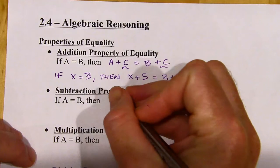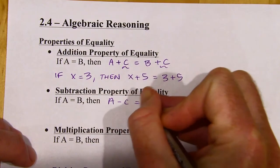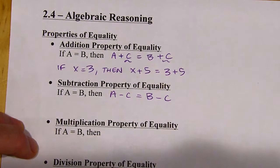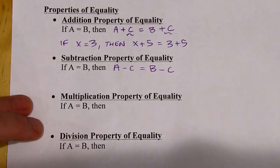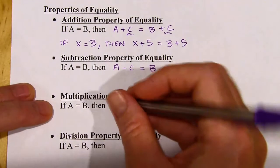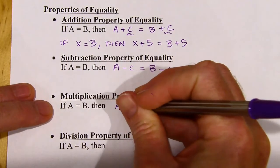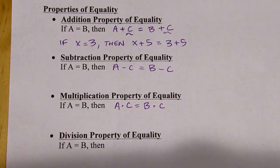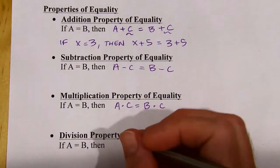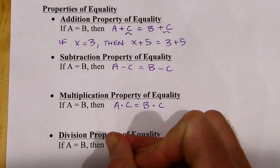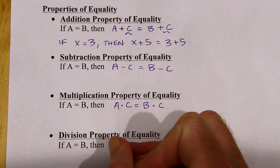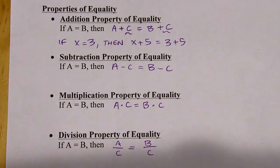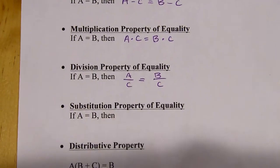The subtraction property is the exact same idea, except that you're subtracting the same thing from both sides of the equation. I could have written the same thing with subtracting 5 on both sides. The multiplication property of equality is when we multiply both sides of an equation by the same thing — so I can multiply both sides by C. And then the division property: we can divide both sides by the same thing, either using the division symbol or as a fraction. So I had A equals B, then I just divided both sides by C.